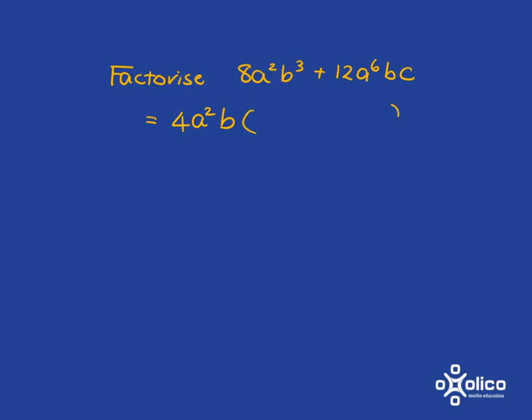Now we just need to figure out what goes in this bracket. This multiplied by this must get me to 8a squared b cubed. Well, 4 times 2 gets me to 8.